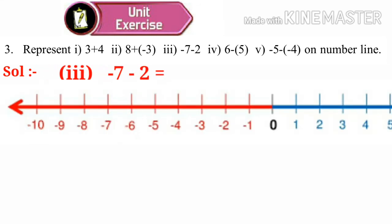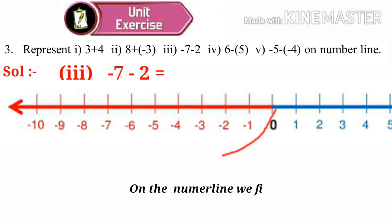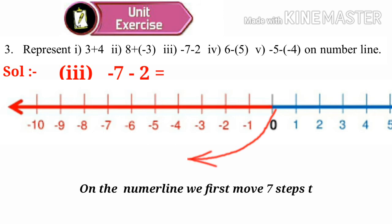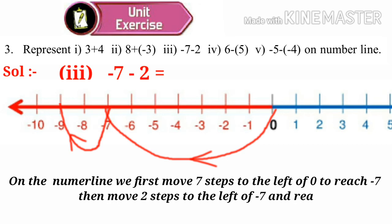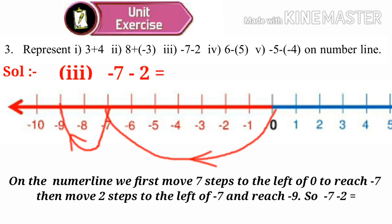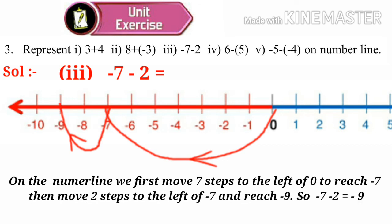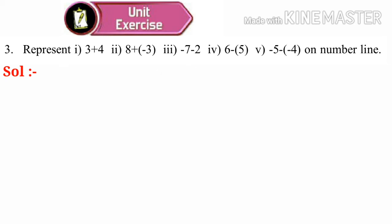Number 3: minus 7 minus 2 is equal to how much? Take the number line. On the number line, we first move 7 steps to the left of 0 to reach minus 7, and then move 2 steps to the left of minus 7 and reach minus 9. So minus 7 minus 2 is equal to minus 9.